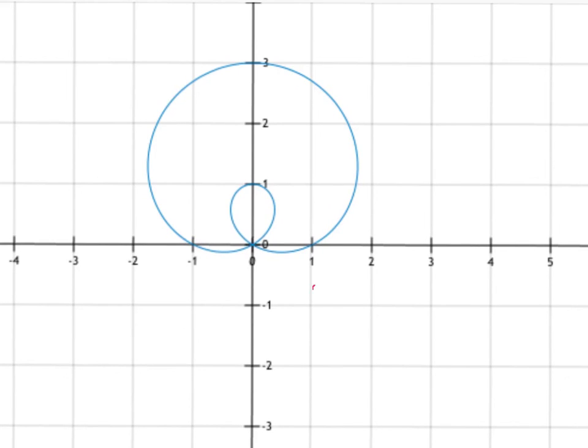So your integral will be one-half, 7 pi over 6 to 11 pi over 6, and r squared, so 2 sine theta plus 1 squared d theta.